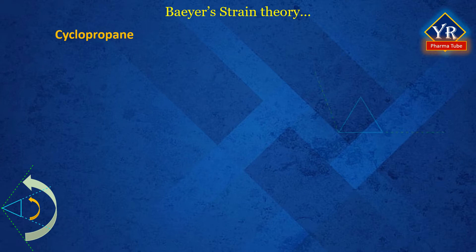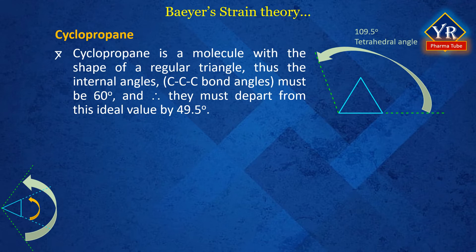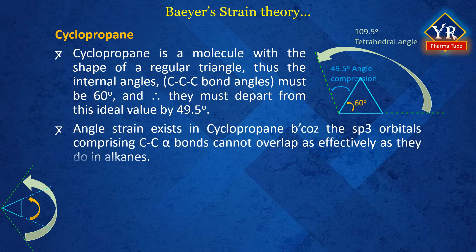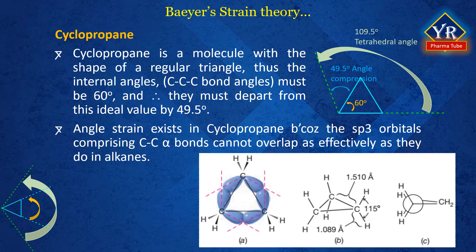Cyclopropane. The carbon atoms of alkanes are sp3 hybridized, with a normal tetrahedral bond angle of 109.5 degrees. Cyclopropane is a molecule with the shape of a regular triangle; thus the internal angles must be 60 degrees and therefore depart from the ideal value by 49.5 degrees. Angle strain exists in a cyclopropane ring because the sp3 orbitals comprising the C–C bonds cannot overlap as effectively as they do in alkanes, where perfect end-on overlap is possible. The C–C bonds of cyclopropane are often described as being bent, orbital overlap is less effective, and the orbitals contain more p character. As a result, the C–C bonds of cyclopropane are weaker and the molecule has greater potential energy.